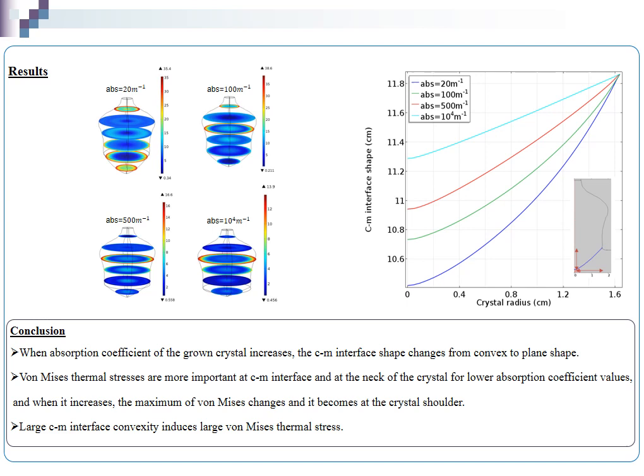And when it increases, the maximum of von Mises changes and it becomes at the crystal shoulder.